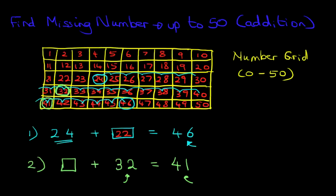And now simply we're going to count from 32 until we get to 41. Count with me: 1, 2, 3, 4, 5, 6, 7, 8, and 9. So it's 9 jumps we've taken. So 9 plus 32 equals 41.